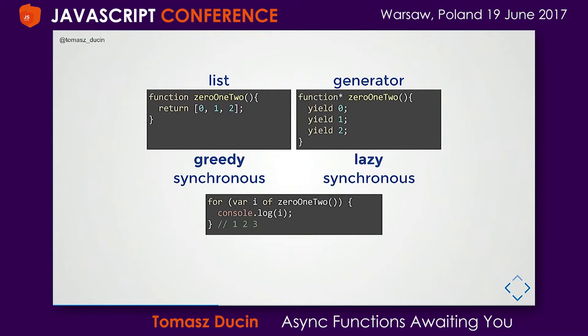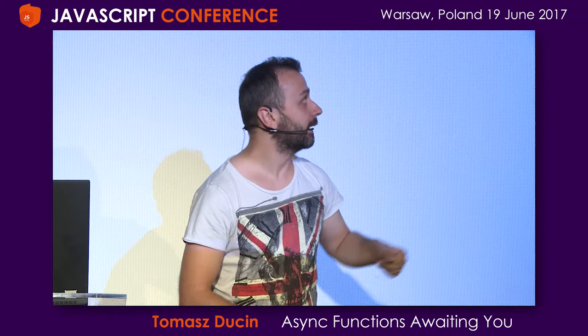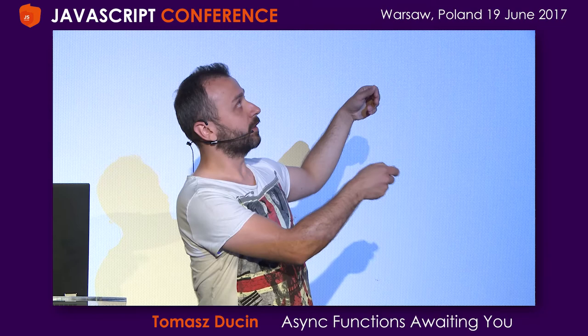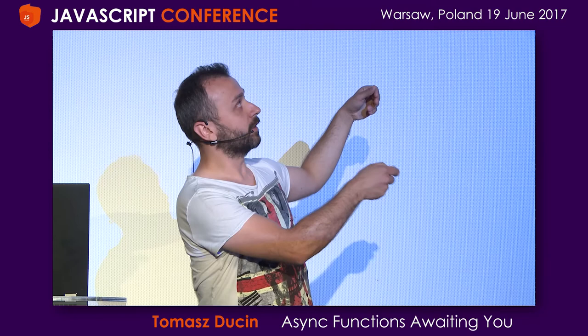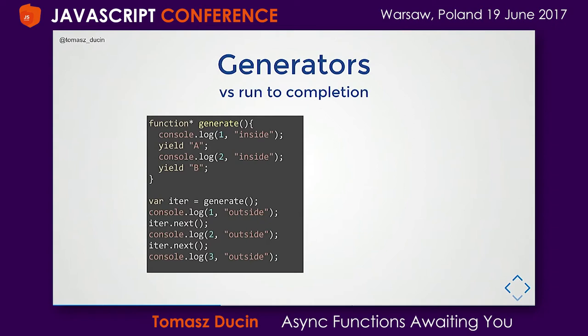If we're just invoking a function, it has to finish so we can proceed with other things. With generators, we immediately enter the function, but there's no event loop going on behind. We have a common abstraction — the for-of loop from ES6 — that works with anything iterable. An iterator, a product of calling a generator, is an iterable. Arrays are iterable, and many other types of iterables are available in JavaScript since ES6.